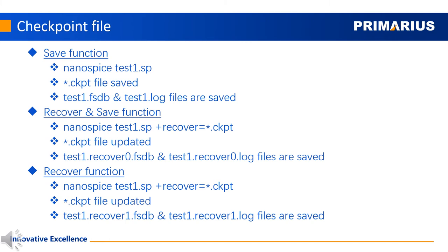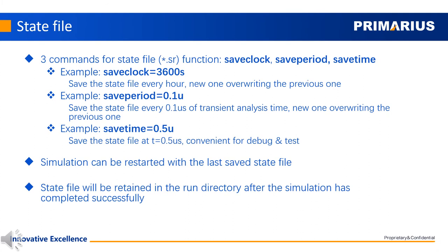We can get the state file by using any of the three commands: save clock, save period, and save time. For example, if we set save clock equal to 3600, the simulator will save the state file every hour, with the new one overwriting the previous one.